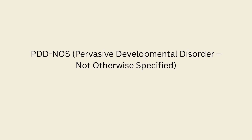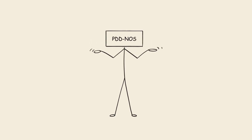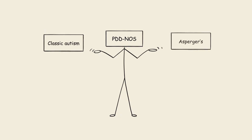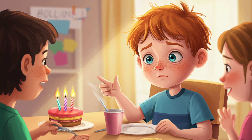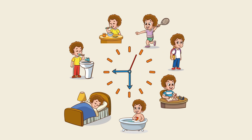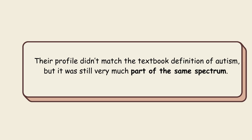PDD-NOS — Pervasive Developmental Disorder, not otherwise specified — used to be the in-between category for people who clearly showed autistic traits but didn't fit neatly into classic autism or Asperger's. Think of it as the spectrum's wild card. A child with PDD-NOS might talk early and use advanced vocabulary but still struggle to understand social rules. They might be fine with flexible routines but still avoid eye contact or display repetitive behaviors — their profile didn't match the textbook definition of autism, but it was still very much part of the same spectrum.